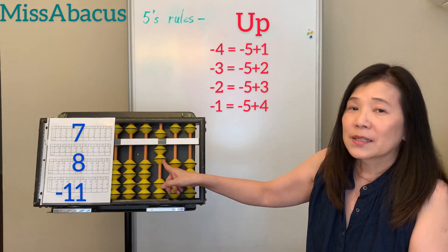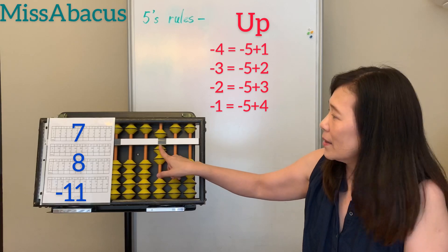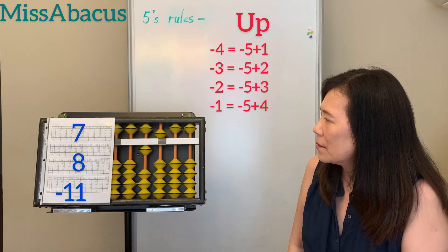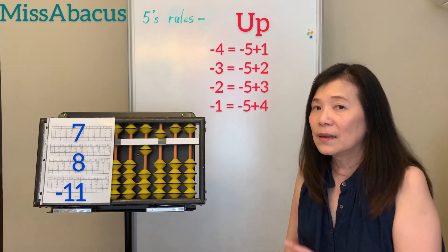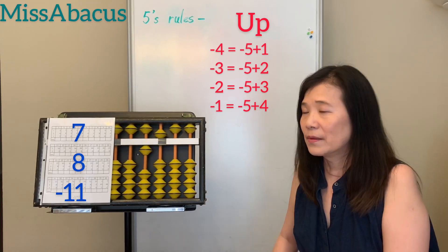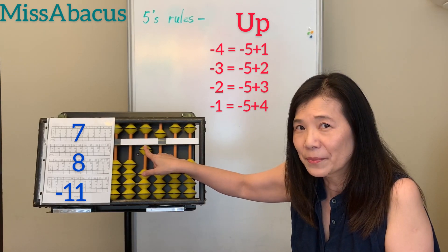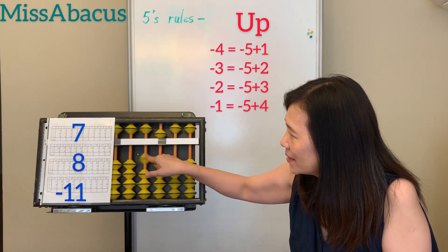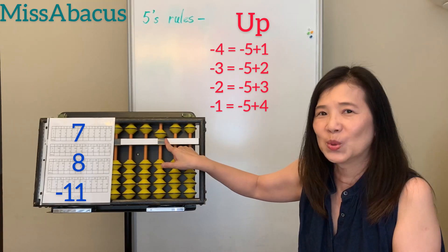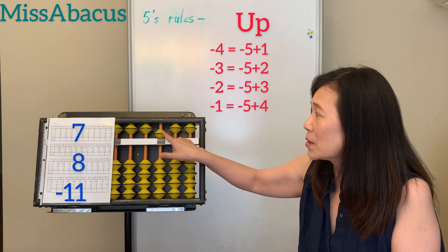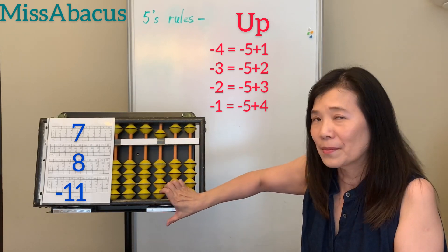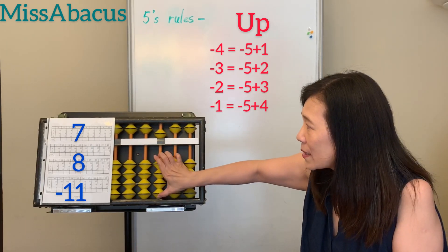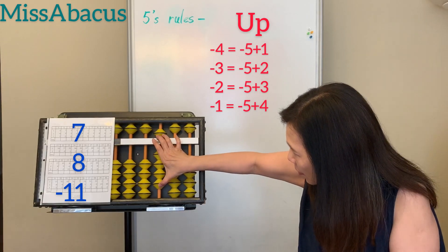Let's try one more: 7 plus 8. Of course 10's rule — 8's complement is 2: minus 2, plus 10. For the 8 minus 1: from left to right, minus 10 and minus 1. Minus 1 — use the 5's rule: minus 5, up 4. Answer: 4.